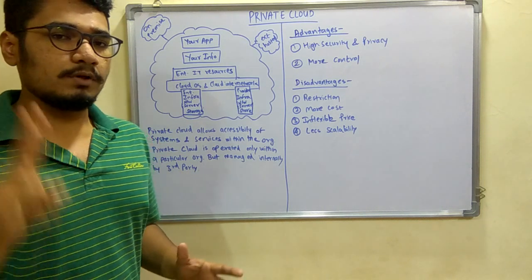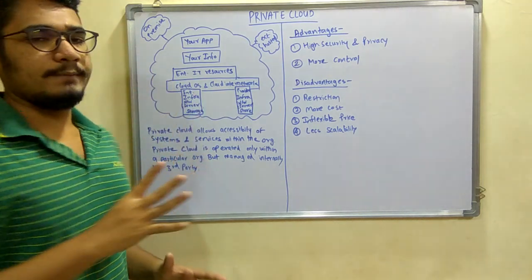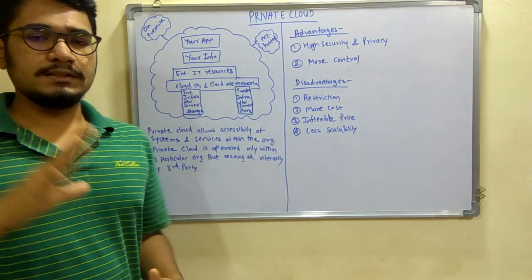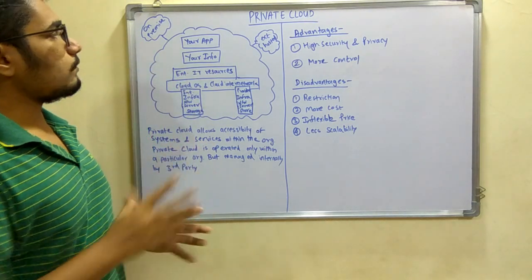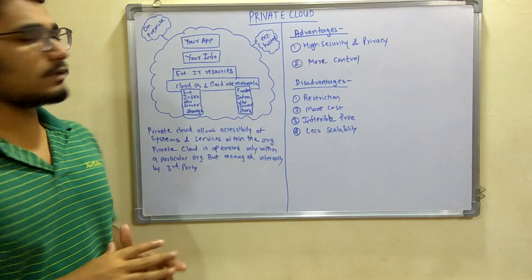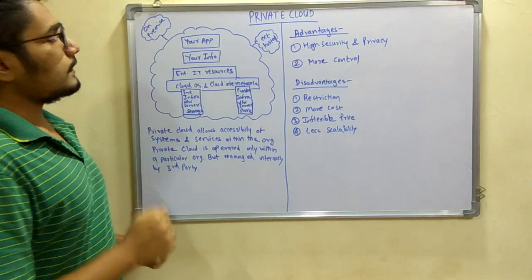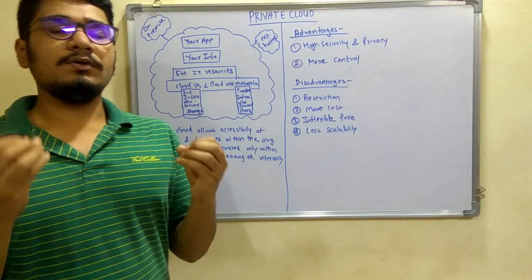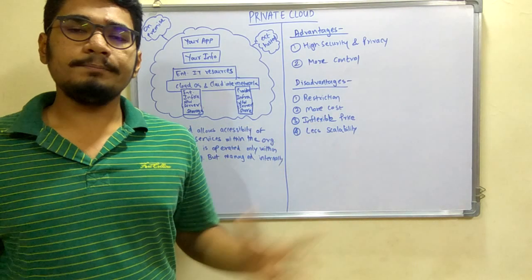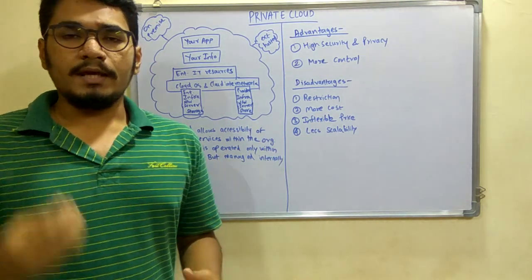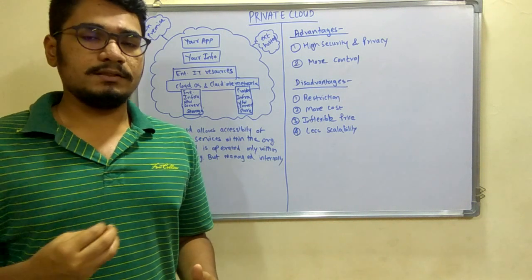In this kind of setup, you have two types of private clouds: one is on-premise cloud and one is externally hosted cloud. On-premise means you are accessing within your organization. You are building and setting up your own cloud for accessing it, but not for any other organization.